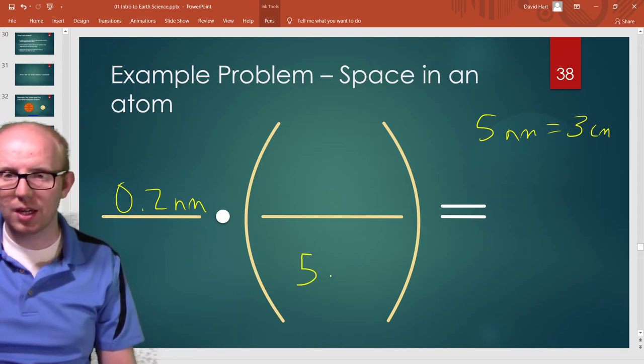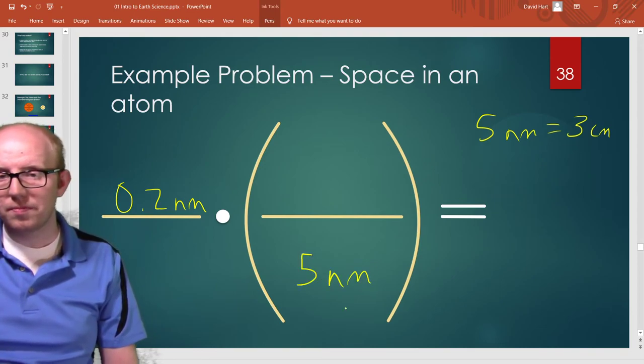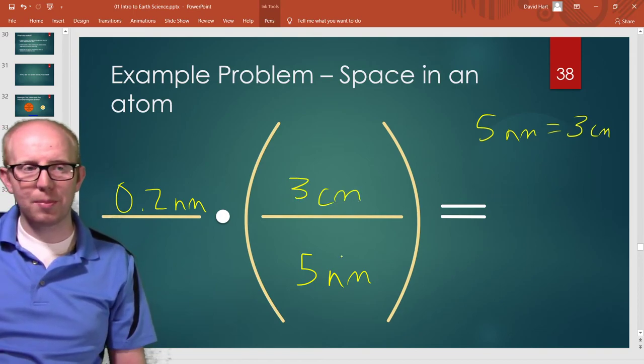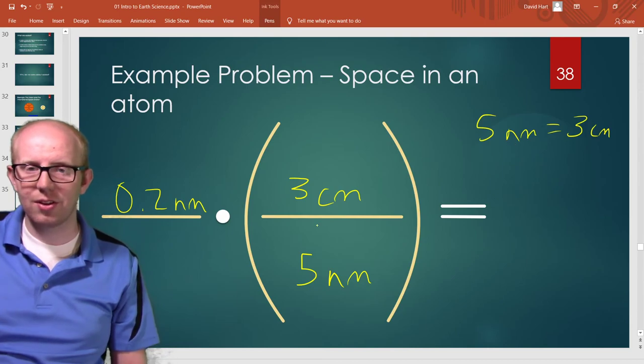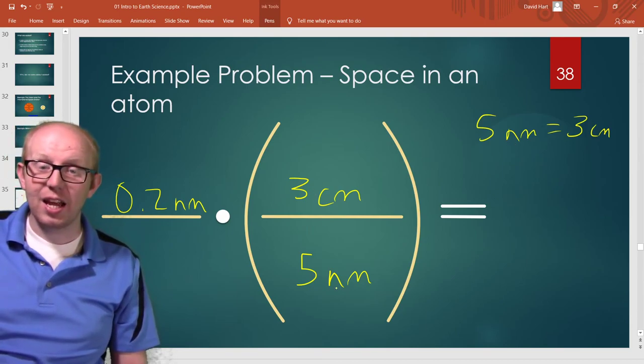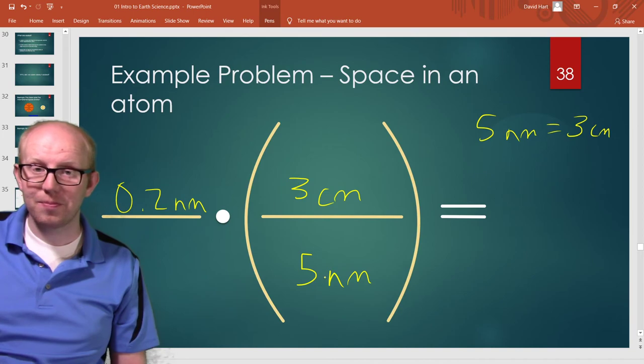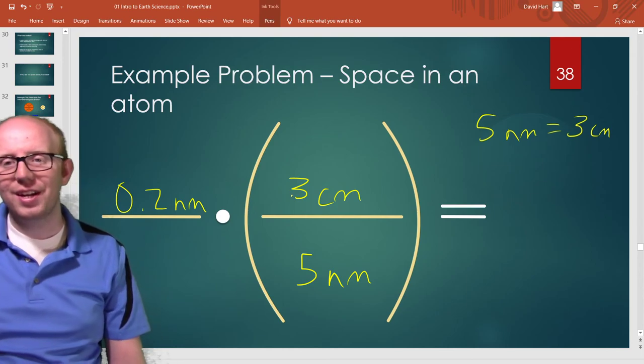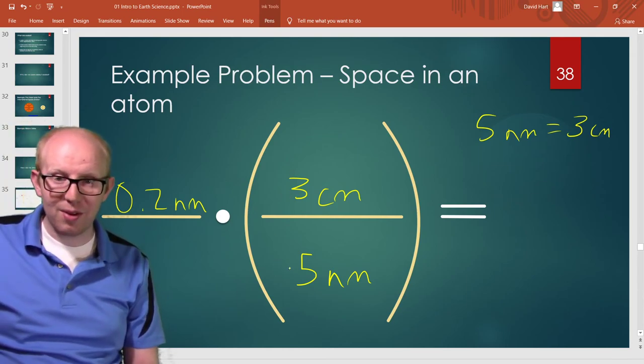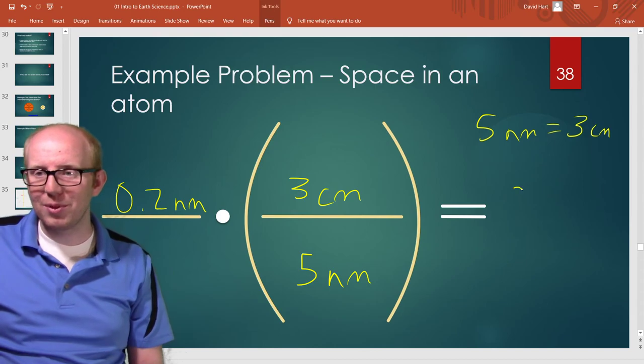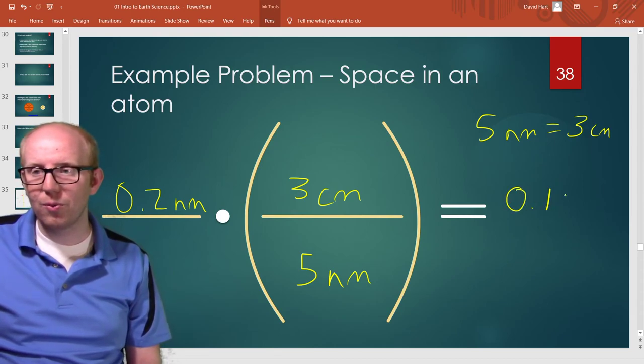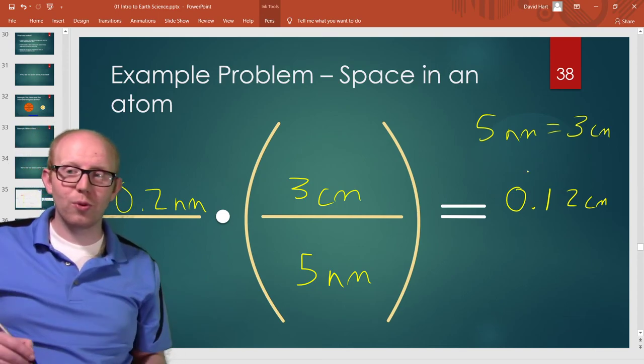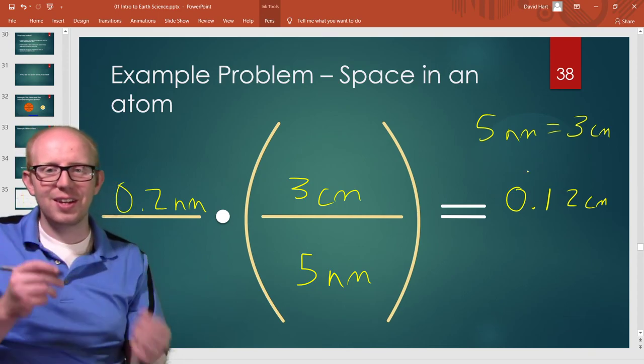So we're going to put five nanometers on bottom and three centimeters on top because that's our scale. So then we're going to multiply these and divide. So in my calculator I take 0.2 and times by three and then I would divide it by five. If I'm doing this correctly in my head I believe that gives you 0.12 centimeters.